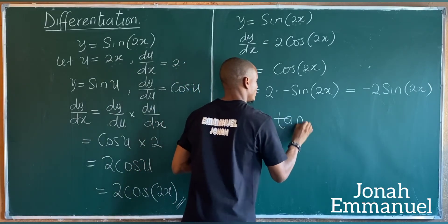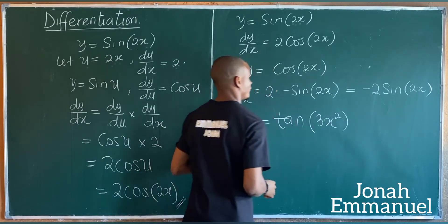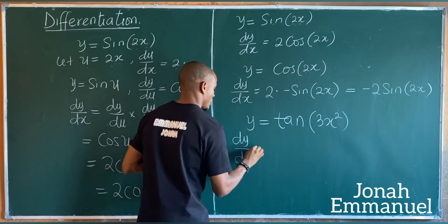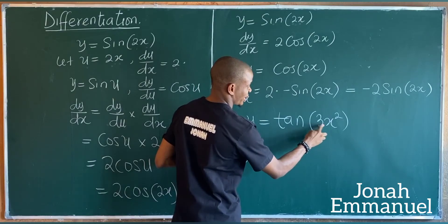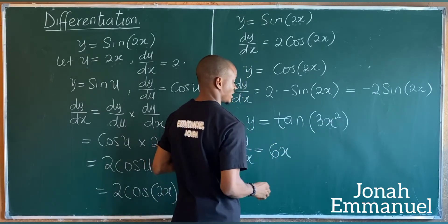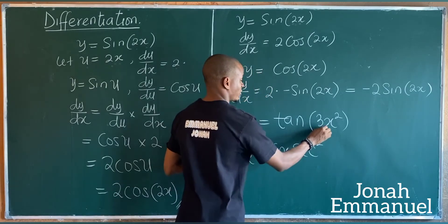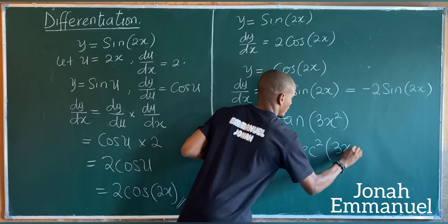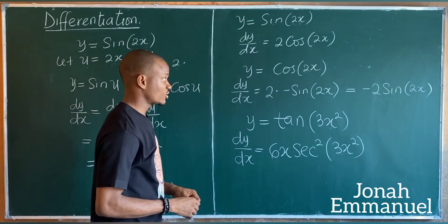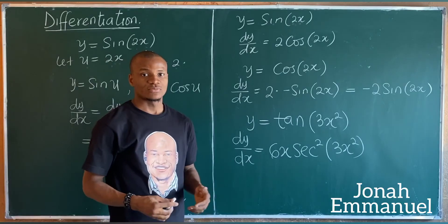One last example: y equals tan(3x squared). Using the shortcut, dy/dx equals: differentiate 3x squared to get 6x, differentiate tan to get sec squared, then repeat 3x squared. So dy/dx equals 6x sec squared(3x squared).